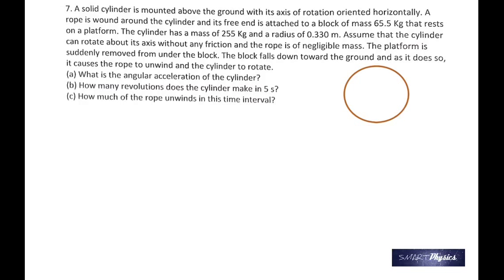Brings us to the seventh one. Here you have a solid cylinder mounted above the ground with its axis of rotation oriented horizontally. A rope is wound around the cylinder. That's the rope going around the cylinder. And its free end is attached to a block of mass. You see the block? 65.5 kilogram that is resting on a platform. That thing is on a platform. And the cylinder has a mass of 255 kilograms, its radius is 0.330 meter. And assume that the cylinder can rotate about its axis without any friction and neglect the mass of the rope.